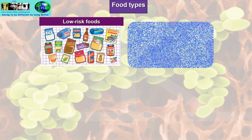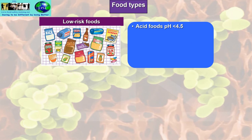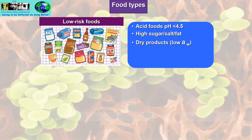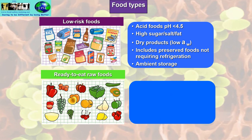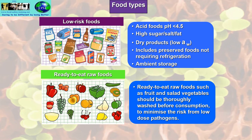Low-risk foods won't support the growth of pathogens or other bacteria. Normally they're acid foods, with different properties. They could be acid foods such as pickles, chutney, sauces with a pH of less than 4.5 — quite acidic. Or they have a high sugar, salt, or fat content — natural preservatives. Dry products with low water availability. This includes preserved foods not requiring refrigeration and anything held in ambient storage, which is room temperature.